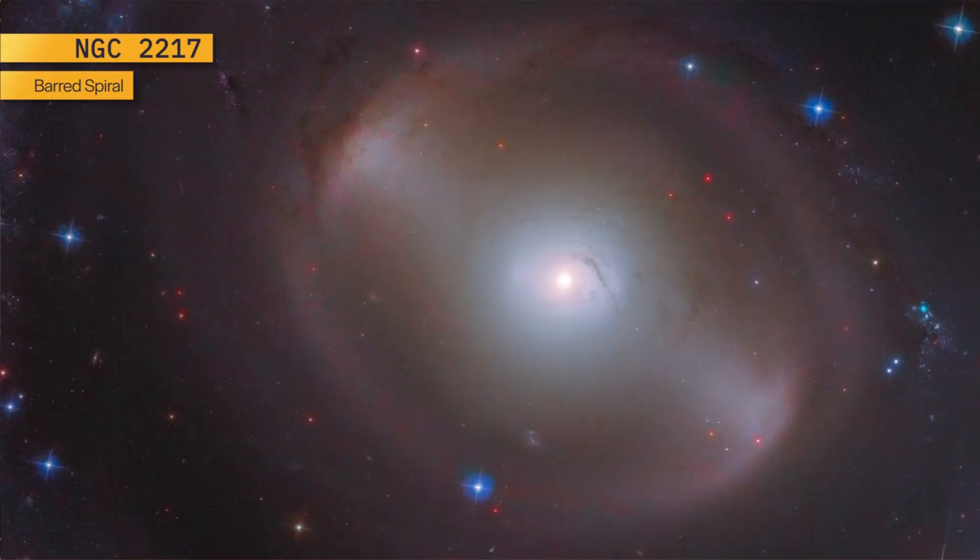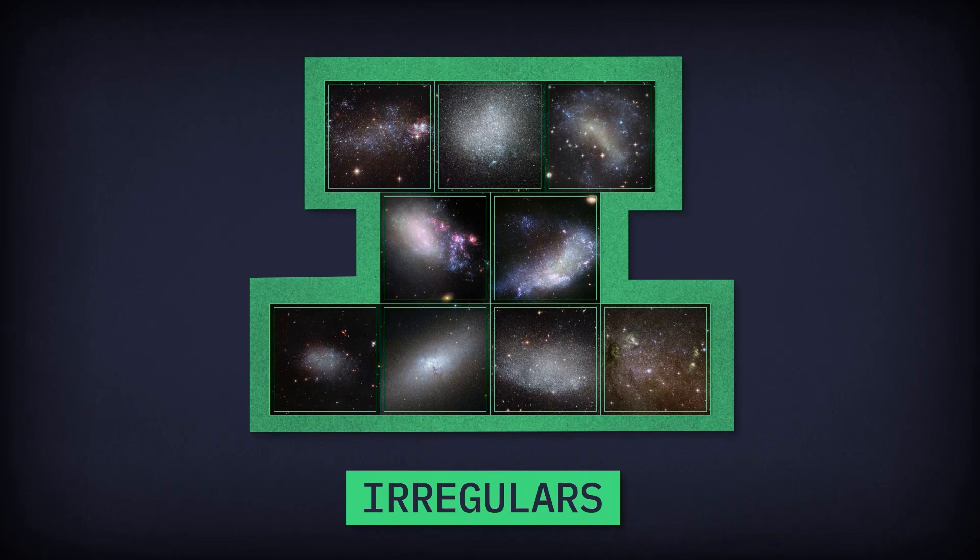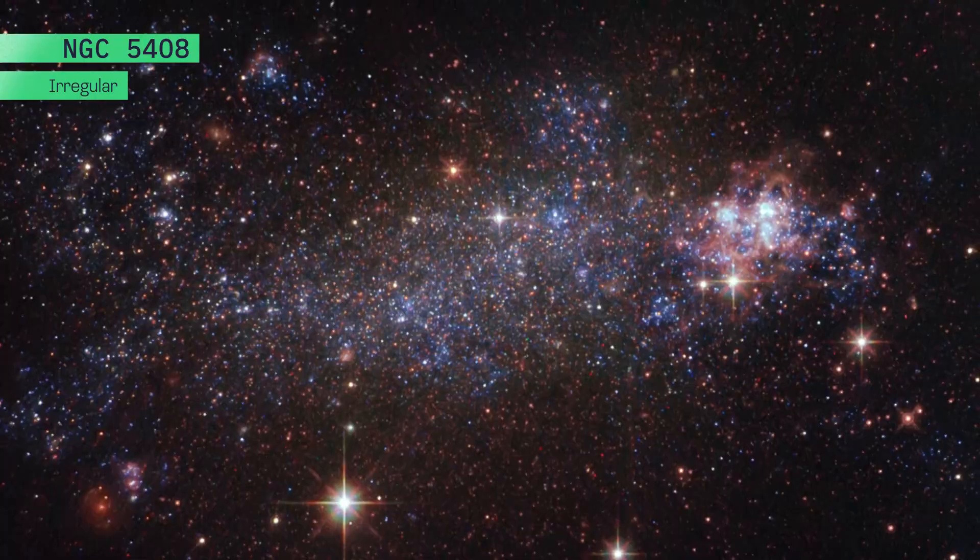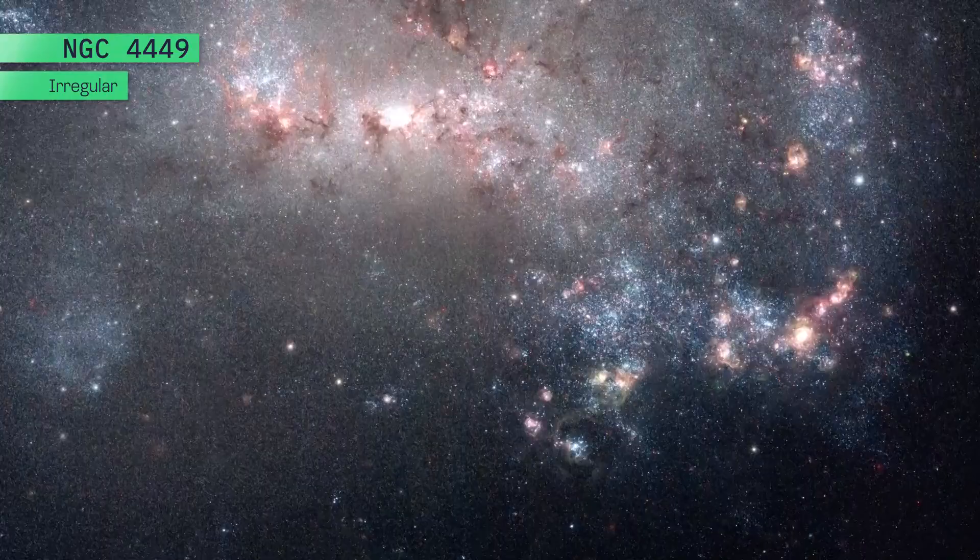Irregular galaxies don't fit into one of the other categories. They are shapeless and have no symmetry or ordered structure. Irregulars may hold old and young stars, and often have knots of gas and dust forming new stars.